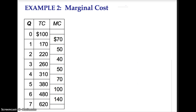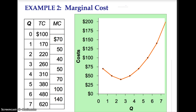Next is marginal cost. Remember, marginal cost is the change in total cost divided by the change in quantity. I suggest pausing the lecture to check that your calculations of marginal cost are correct. Marginal cost starts at $70, falls to $40, and rises back up to $140. On a diagram, the marginal cost curve looks like a J.